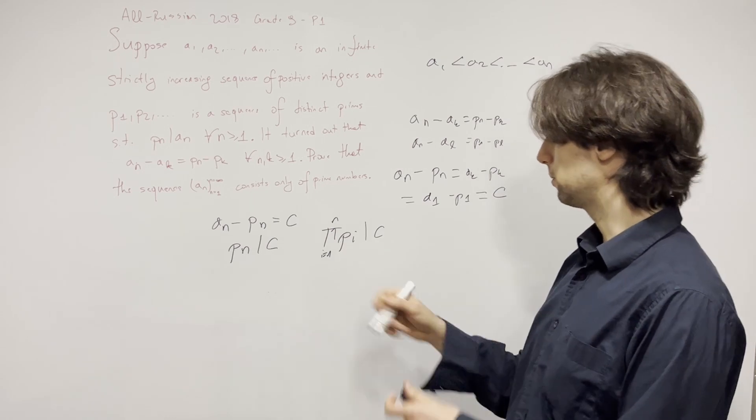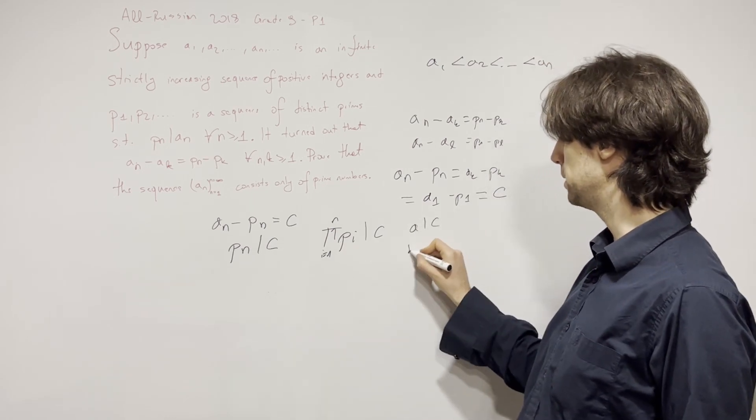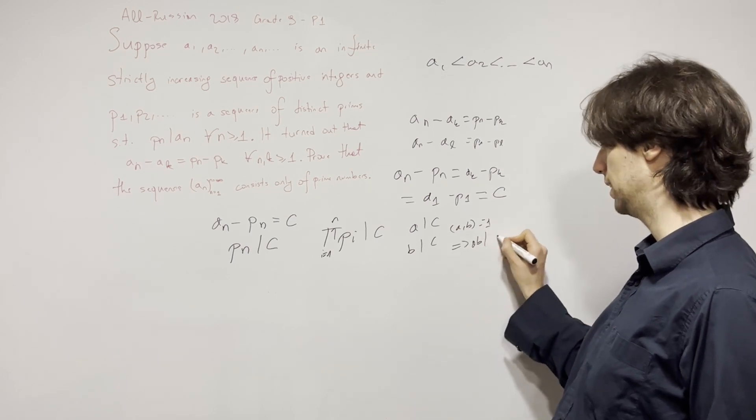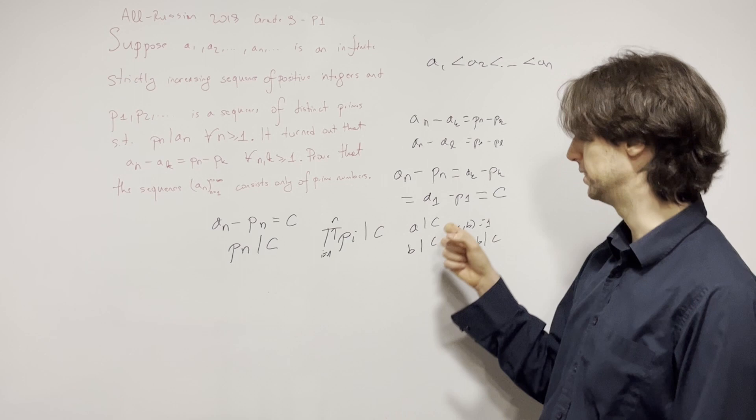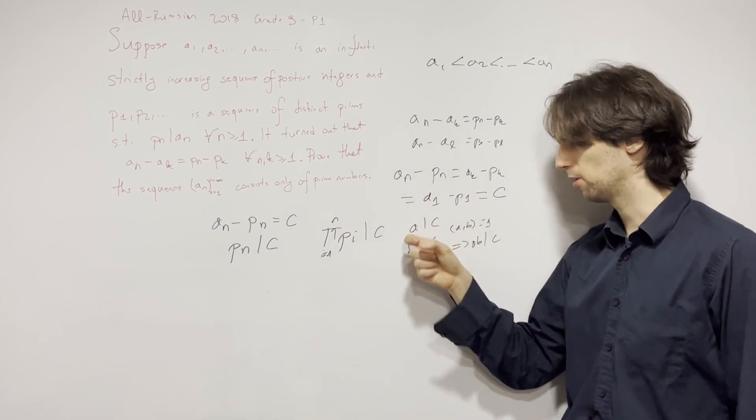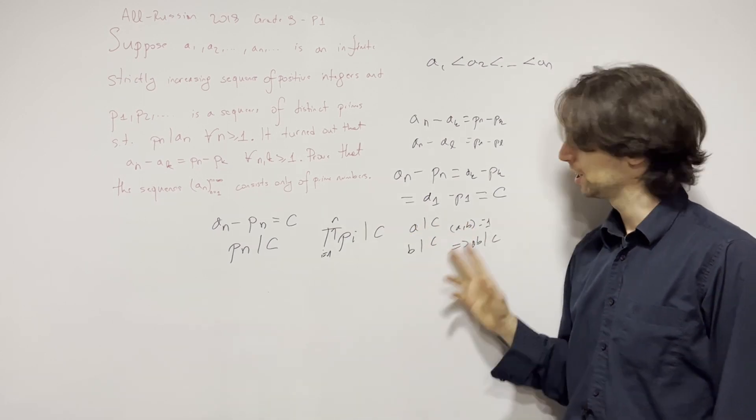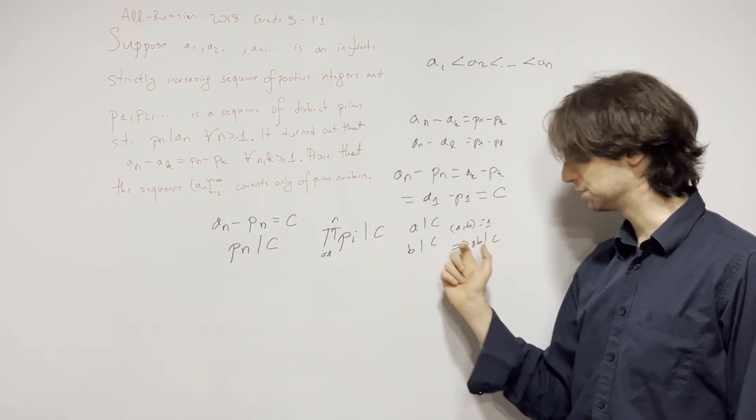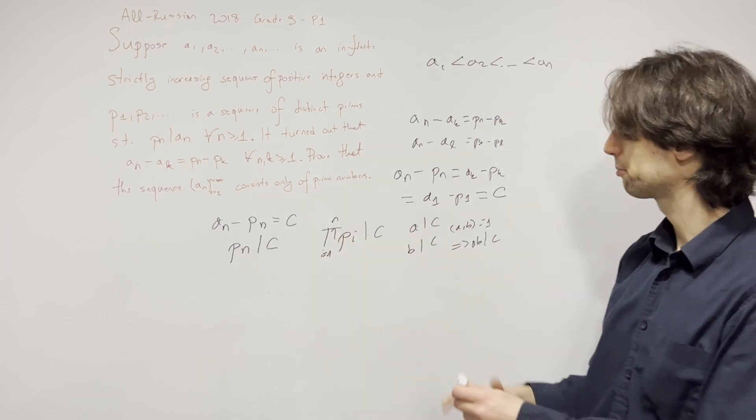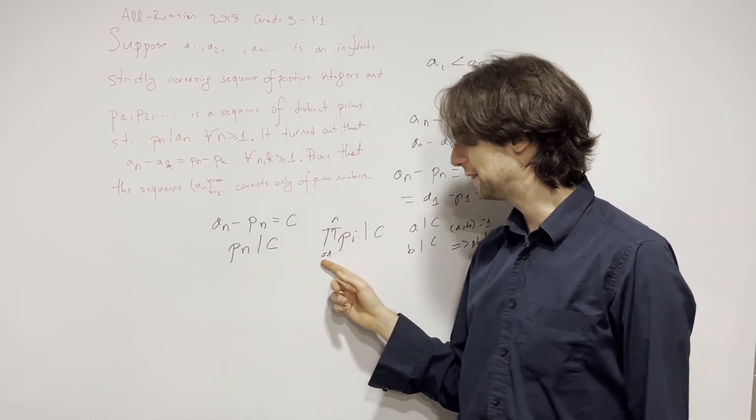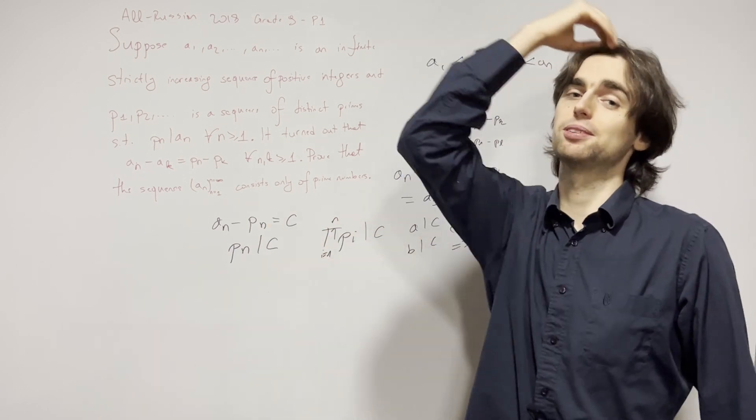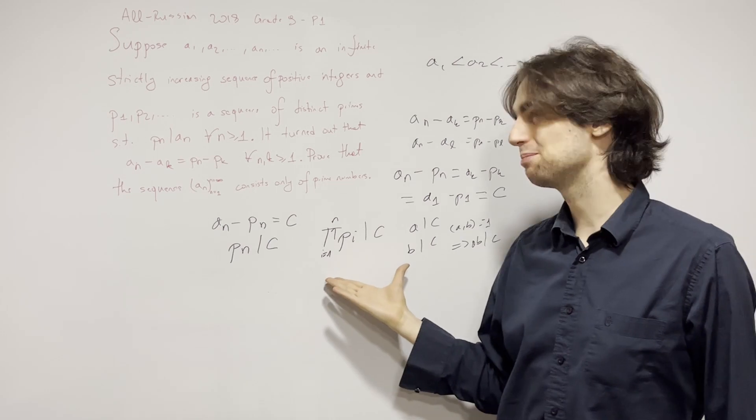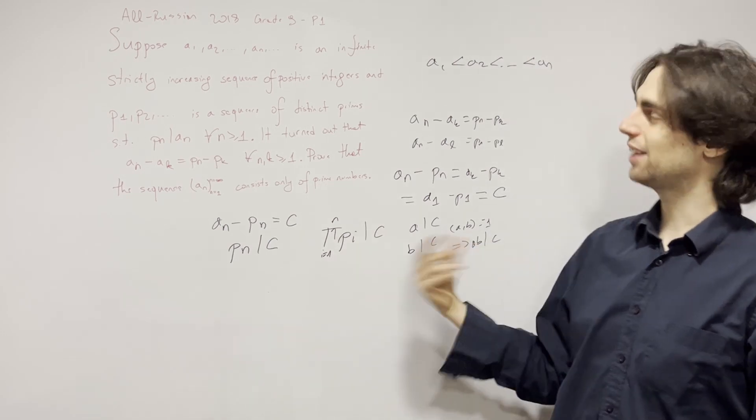The product of the first n distinct primes will also divide c. This follows from the fact that if a divides c, b divides c, and gcd(a,b) is one, then a times b divides c. You can think of this as: if 12 is divisible by 4 and 3, then it's divisible by 4 times 3. This thing right here grows without bound.